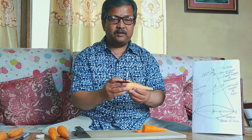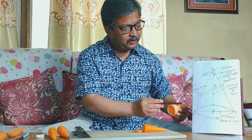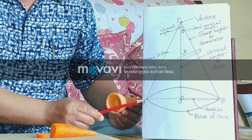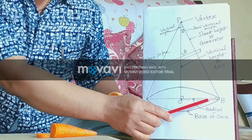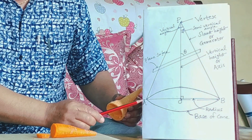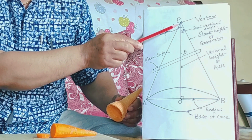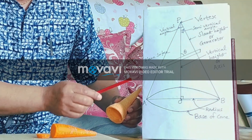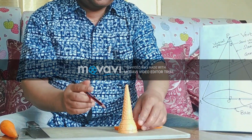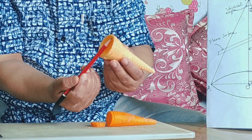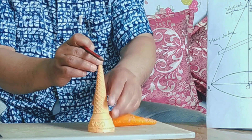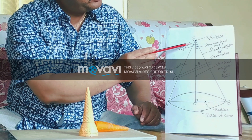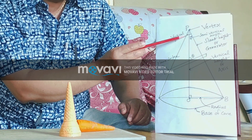The cone's base is a circle, so it has a diameter. In the figure, AB is the diameter of the base of the cone. A is one end of the diameter and B is the other end. When each end of the diameter is joined with the vertex P, we get lines called the slant lines or generators of the cone. There are two generators, and these two generators form an angle at the vertex called the vertical angle of the cone.